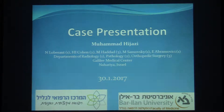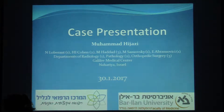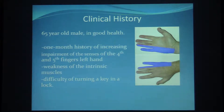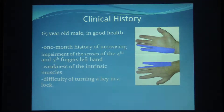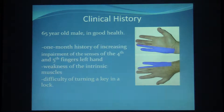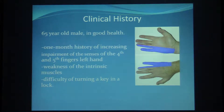I'm going to talk about an entity that was discussed in detail in the past lecture. I will go over the case very quickly. We have this 65-year-old man, he's in good health. He has a one-month history of increasing impairment in the sensation of the fourth and fifth digits. He also has weakness in the intrinsic muscles of the left hand, and he has difficulty turning a key in a lock.